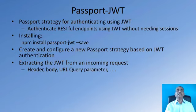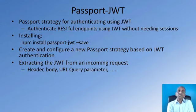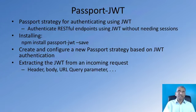The passport-jwt module supports extracting the JWT token from the incoming request message — from the authentication header, which is what we will do in the exercise, from the body of the incoming request, or even from URL query parameters. The passport-jwt module uses the JsonWebToken module for verification. With this understanding of JsonWebToken and how they are useful, we will move on to the exercise where we will use the passport-jwt module together with the JsonWebToken module and configure our Express REST API server to use JsonWebToken.